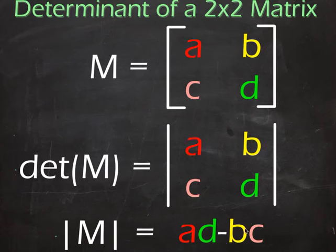You could also write it like this as |M| with vertical bars. That means the determinant of matrix M. The way to actually find the value, you multiply element a times d, find that product, then multiply b times c or c times b.